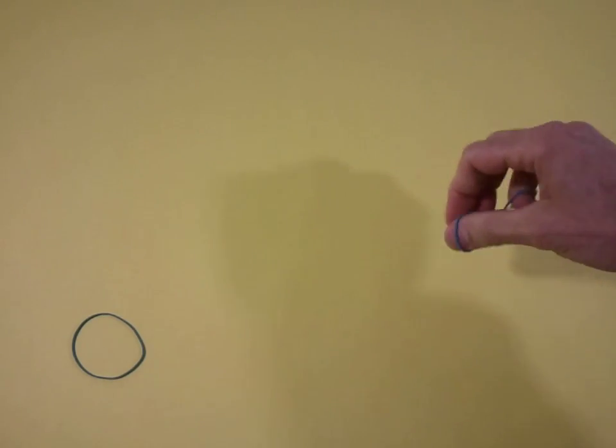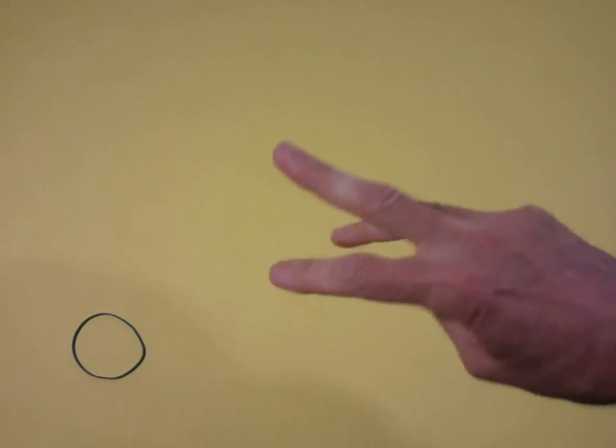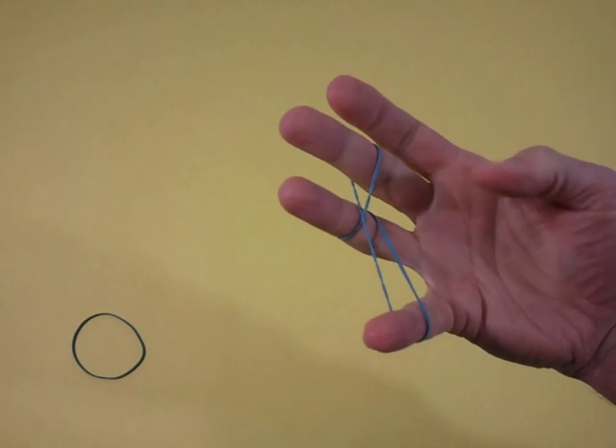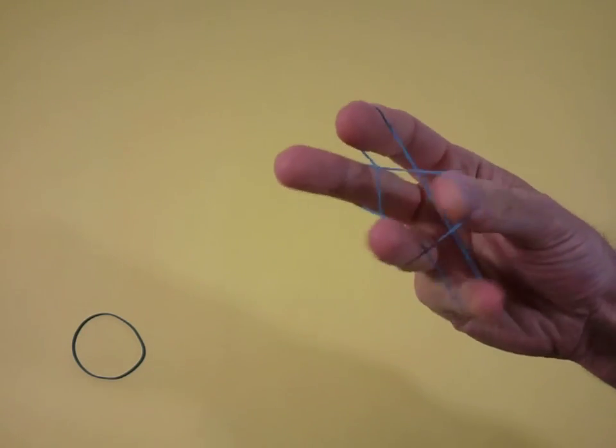Close your eyes if you don't want to see how I did it. I'll do it slowly here. I start with the band loose, I'm putting it on two fingers, and then catching it with my thumb, and then doing that, and that, and that.